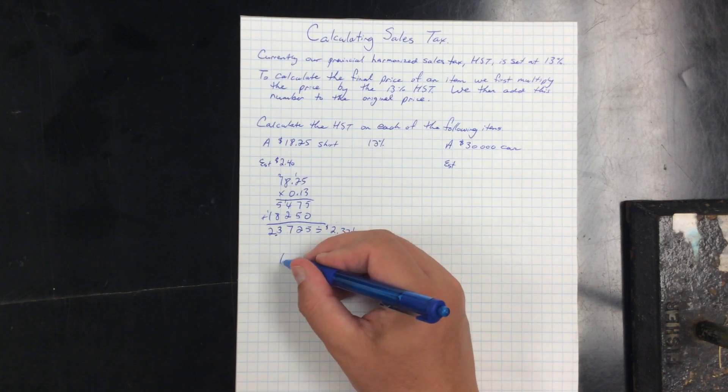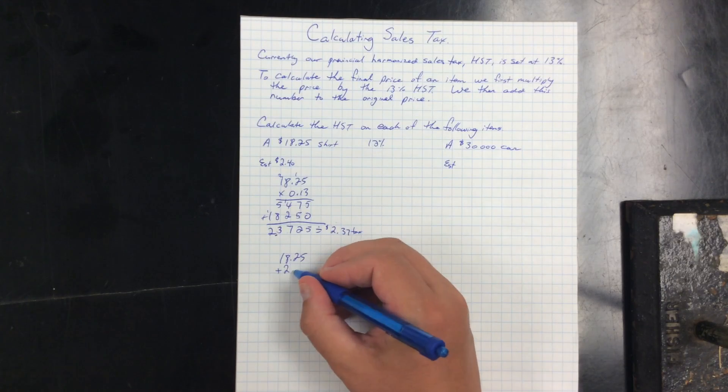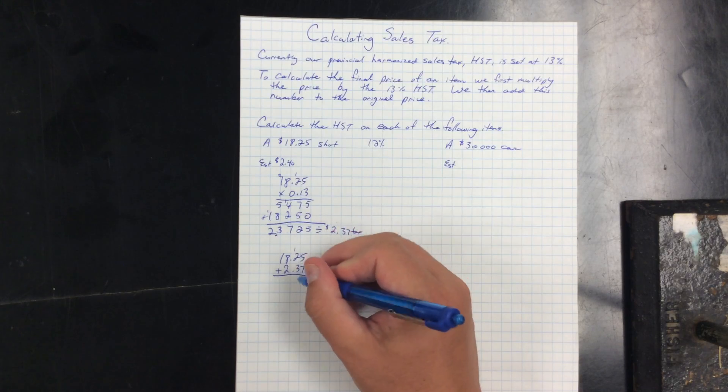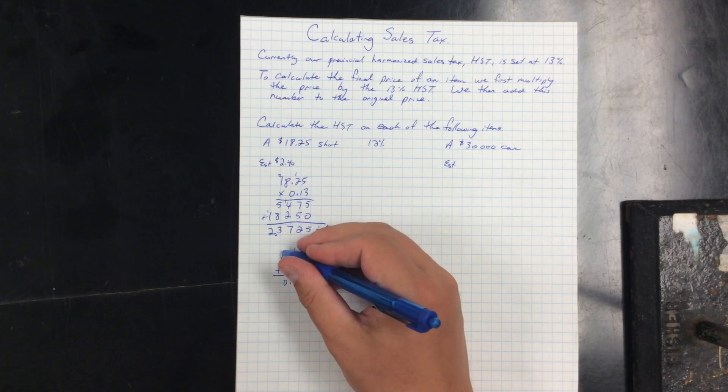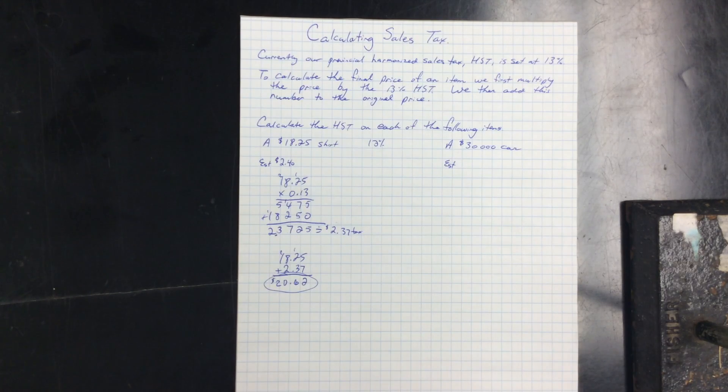So it's $2.37 tax. I'm going to have to take my original $18.25 and add $2.37 to it. That's 12, 6, 0, and when I get to the cash register I'm going to be asked for $20.62.